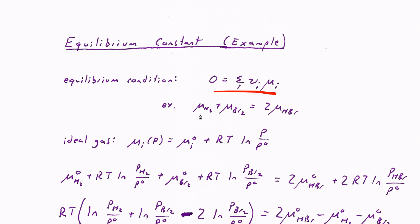What that means is the chemical potentials of the reactants, H₂ and Br₂, must add up to the same thing as the chemical potential of the products — two molecules of HBr. Since those three species, the reactants and the products, are gases, as a first step let's see what we can understand about this equilibrium condition if they behave like ideal gases.